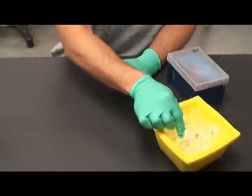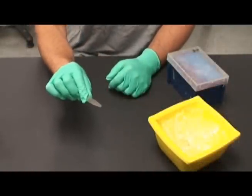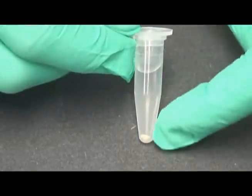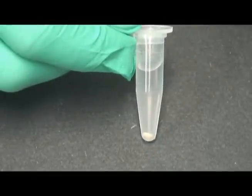Centrifuging this tube for 2 minutes will pellet the cells to the bottom of the tube. Following centrifugation, the cells are seen as a pellet at the bottom of the tube.